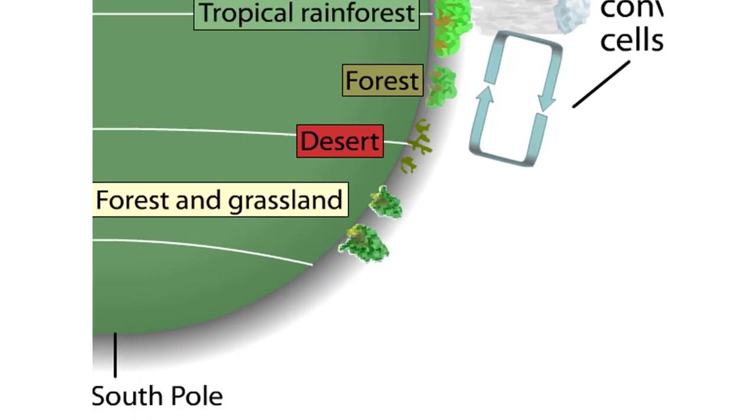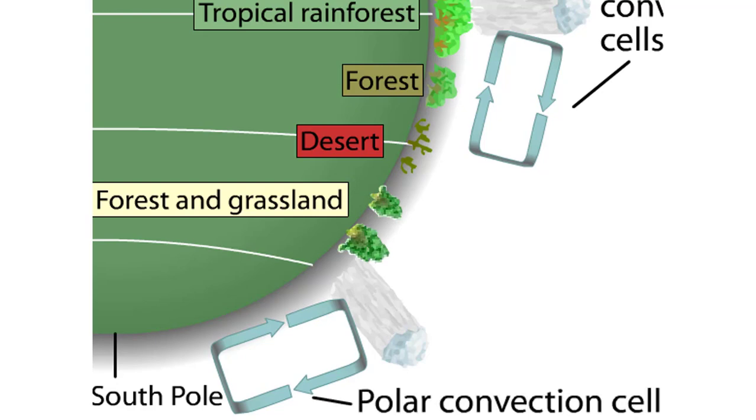At the poles, cold, dry air sinks to Earth and moves toward the equator. As it sinks, this air becomes somewhat warmer and picks up moisture from the environment. The warmer air then rises again and cools. As the air cools, water is released. These cycles of air make up the polar convection cells.